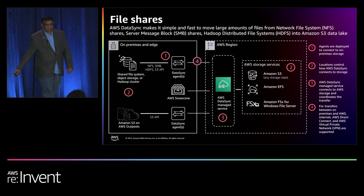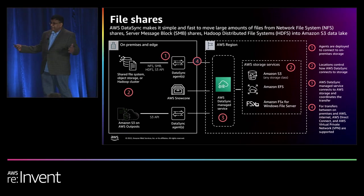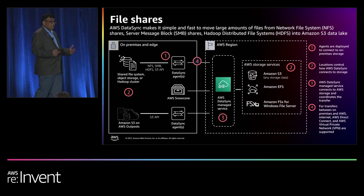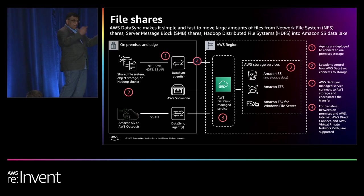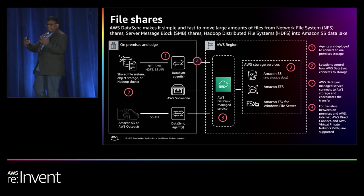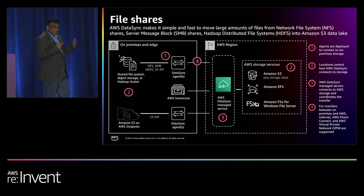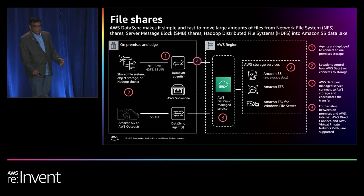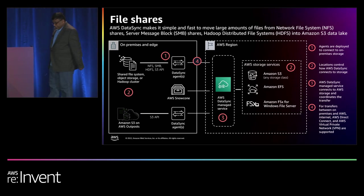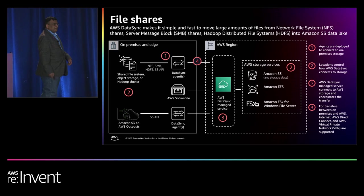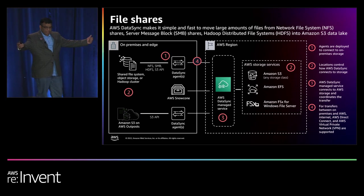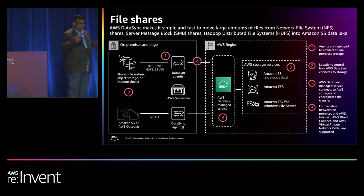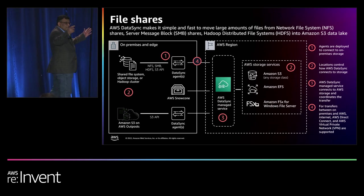File shares: organizations are storing business application data in files on network storage drives. These business application data contain valuable data, and organizations would like to bring this file share data into the storage layer to derive insights and make critical business decisions. You can deploy an AWS DataSync agent to connect to your file system, select your AWS storage destination — which could be your Amazon S3 landing zone — and start moving the data. You can also use Snowcone device to bring data into AWS. We recommend AWS Snowmobile for petascale data transfer use cases.